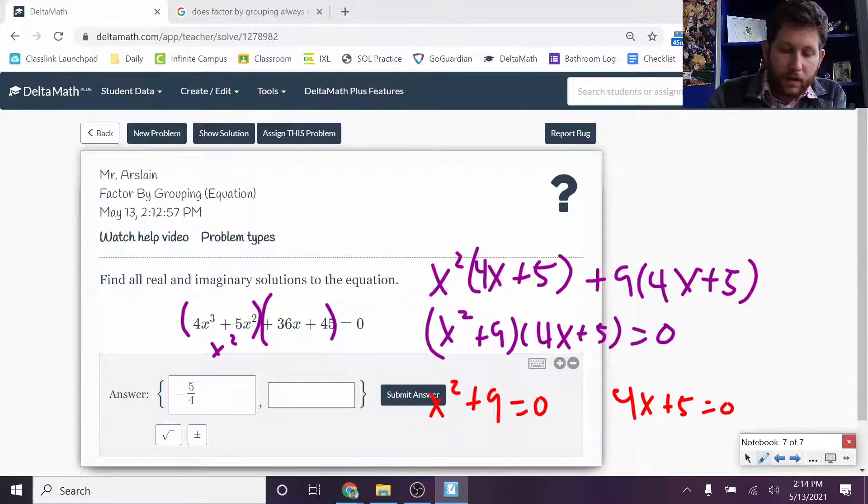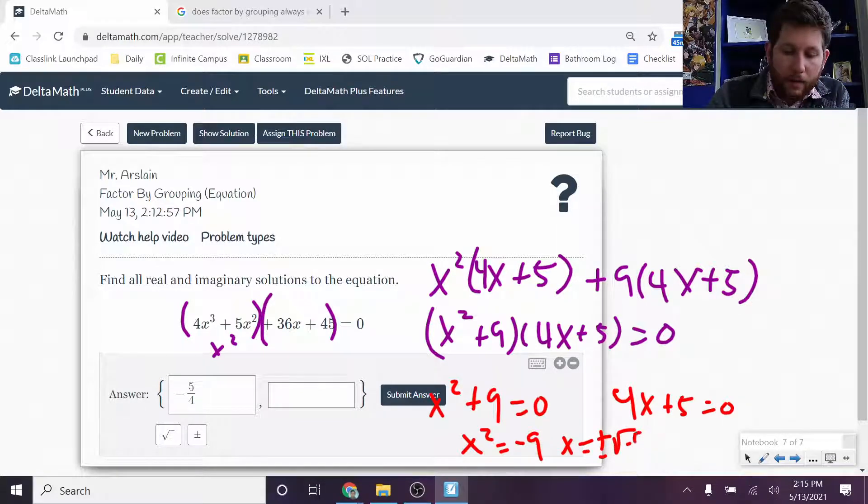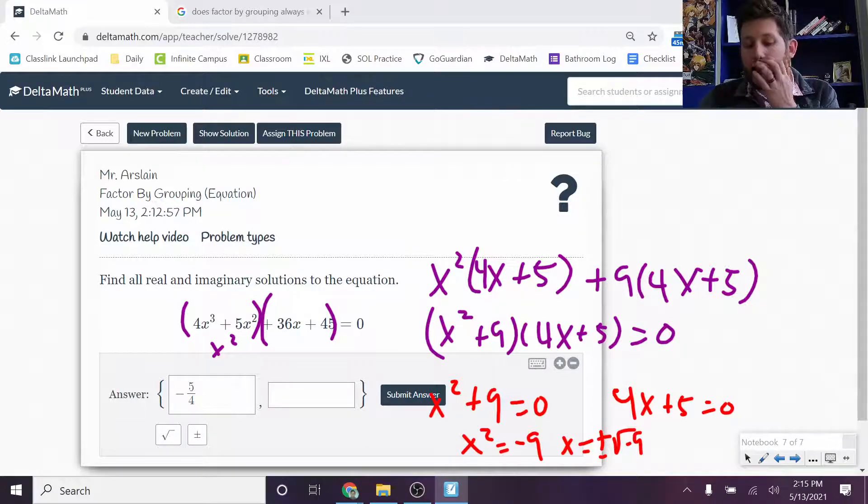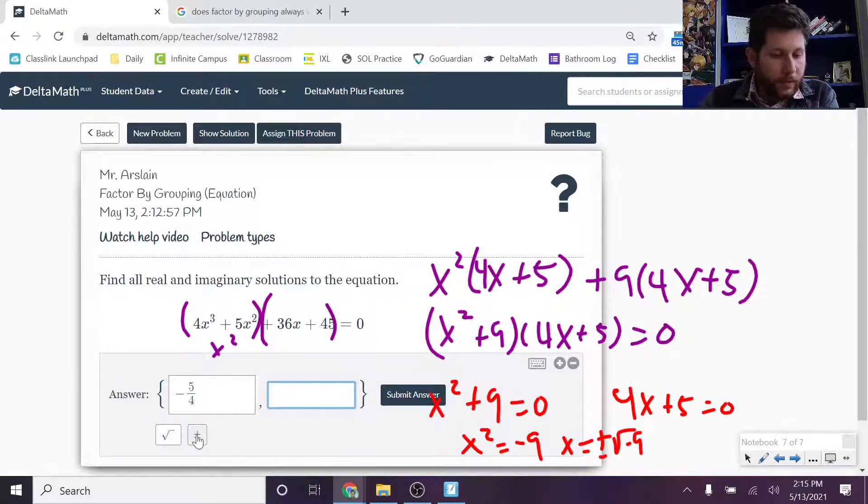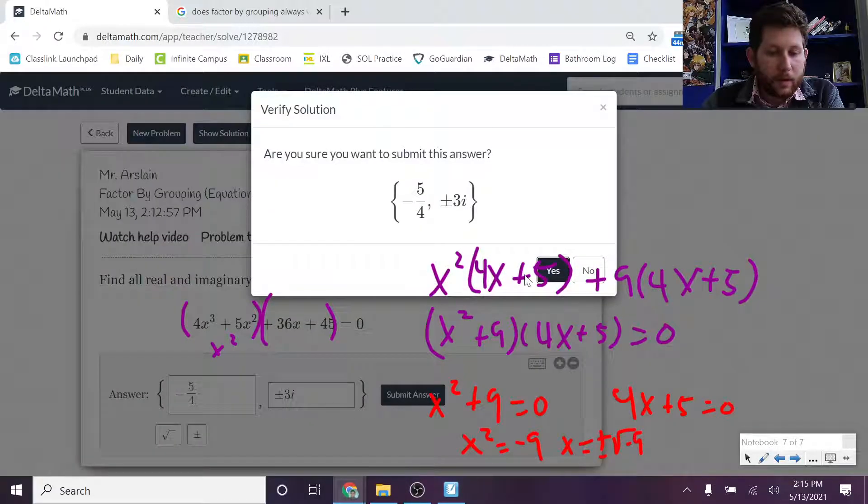Now let's look at this one over here. I get x squared is equal to negative 9. So x is equal to plus or minus the square root of negative 9 or plus or minus 3i. Remember, the square root of 9 is 3. The square root of a negative is i. So over here, you could do these as separate ones. I'll just do them together. I get 3i. So it's taking our solving that we've done in the past, and it's combining with this factor by grouping. Let's go ahead and submit this answer.